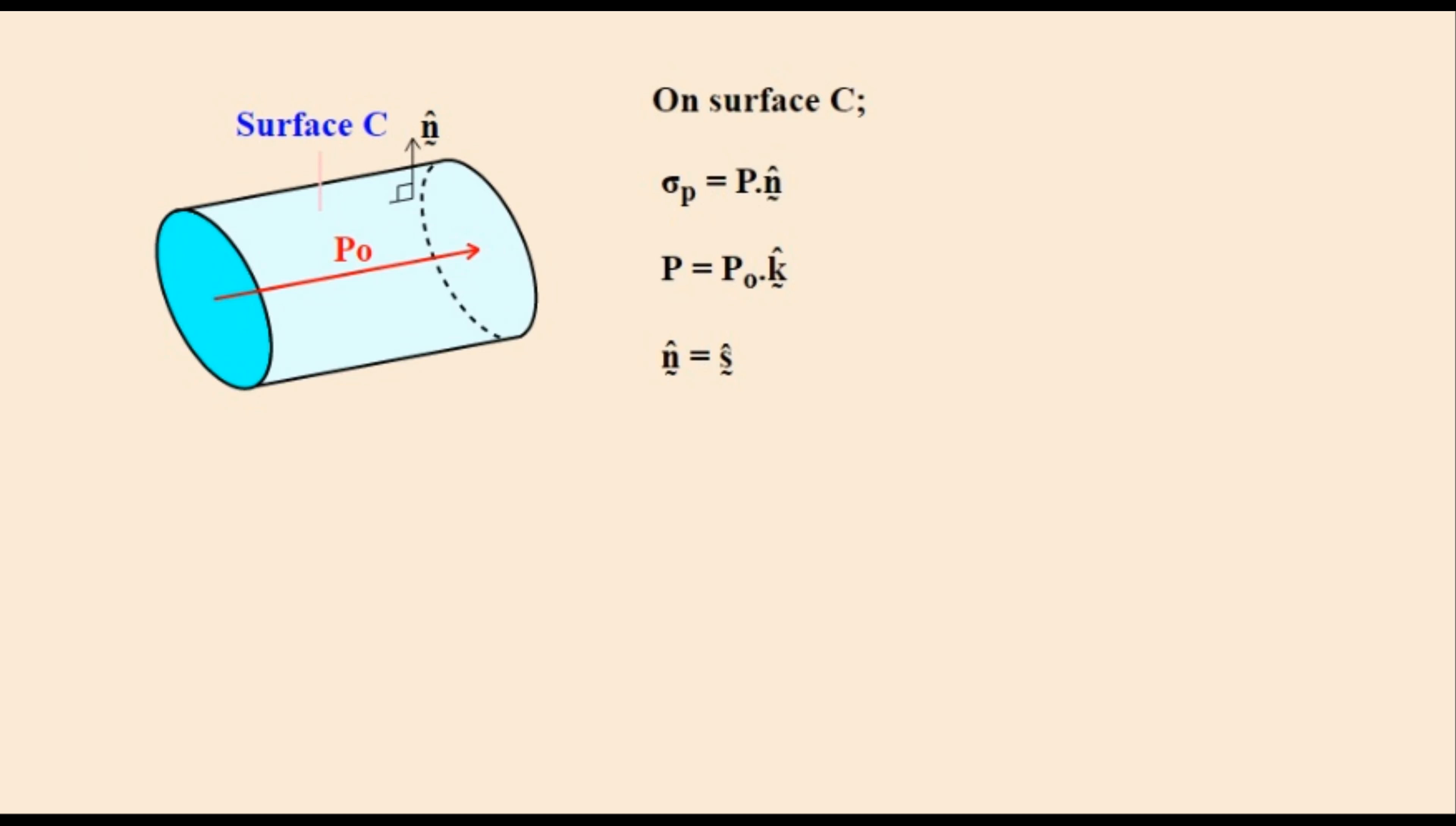Moving now to surface C which is the curved surface of the cylinder the calculation is the same as the other two until we get to its surface normal vector which is easily given by unit S in cylindrical coordinates. Plugging these values into the equation at the top gives us this expression. Because K and S are always perpendicular to each other then multiplying them together will give an answer of 0.